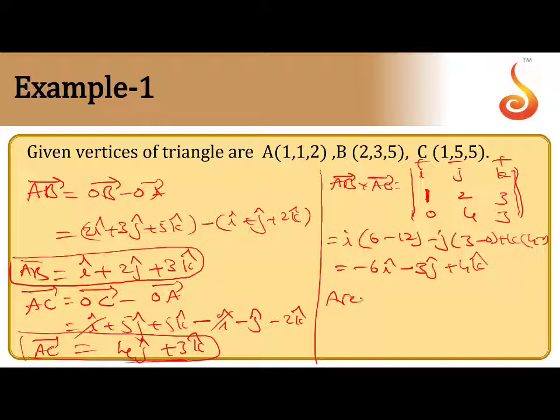So, therefore area equal to what formula? Half into magnitude of AB bar cross AC bar. So, AB bar cross AC bar means root over 36 plus 9 plus 16. This will give root 61 by 2 square units. Root 61 by 2 square units. So, area always in the square units. Area equal to root 61 by 2. This is a very good question for 3 marks. It is very simple.